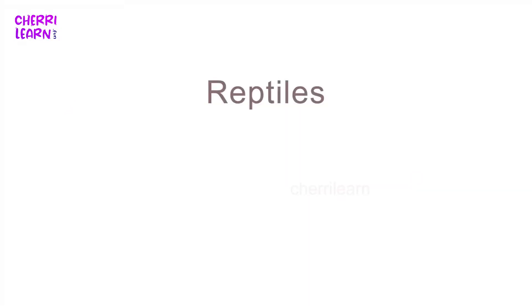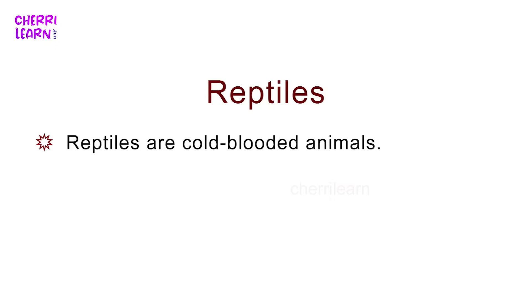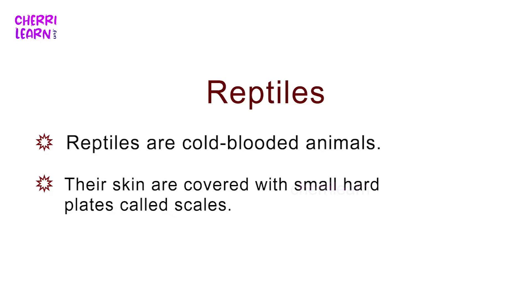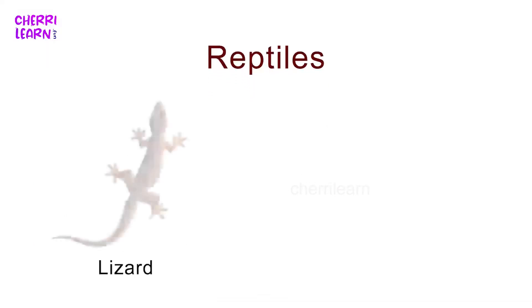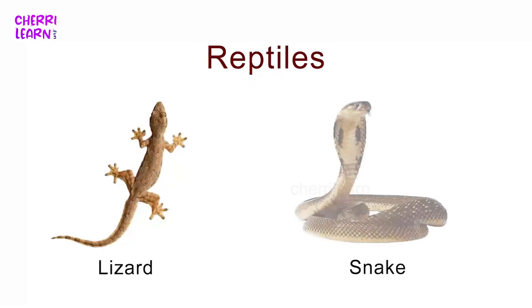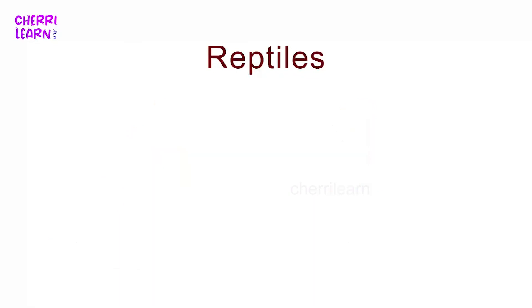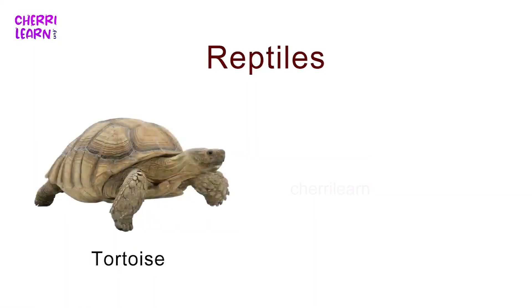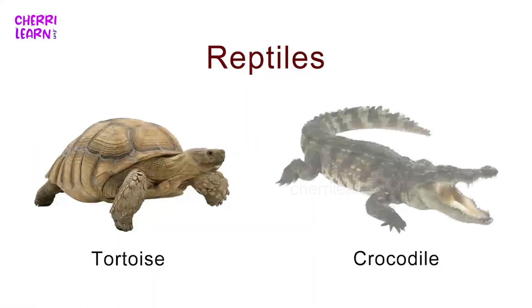Reptiles are cold-blooded animals. Their skin is covered with small hard plates called scales. They lay eggs. Examples include Lizard, Tortoise, and Crocodile.